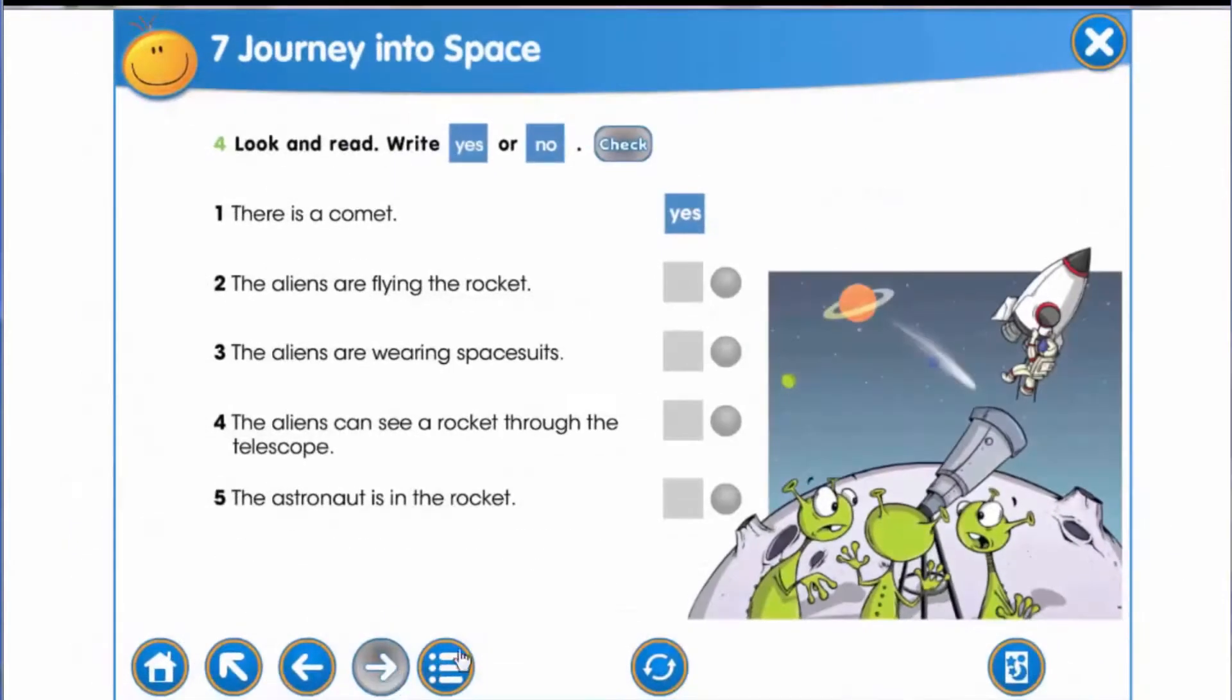And at last, exercise number four. Look at the picture. Read the sentences. And write yes or no. First of all, examine the picture. What can you see there? Let's read the sentences.